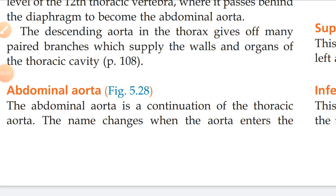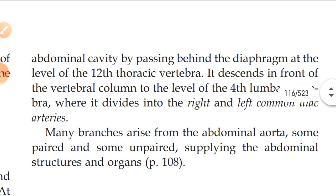The abdominal aorta is a continuation of the thoracic aorta. The name changes when the aorta enters the abdominal cavity by passing behind the diaphragm at the level of the twelfth thoracic vertebra. The large branches of the abdominal aorta arise from it, including both paired and unpaired branches.